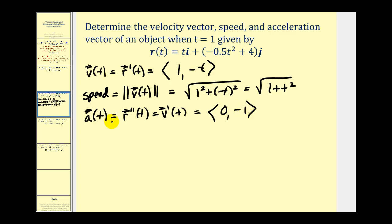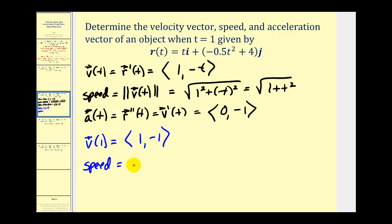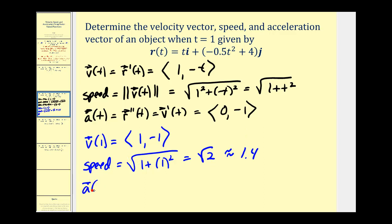Now we have everything needed to find the velocity vector, speed, and acceleration when t equals one. The velocity vector v(1) is found by replacing t with one: the components are one and negative one. The speed is the square root of one plus one squared, which is the square root of two, approximately 1.4. The acceleration vector a(1) is the component vector zero, negative one.